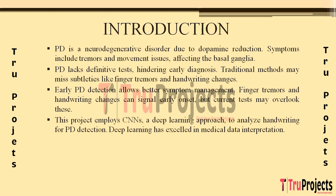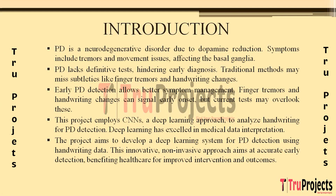This project leverages the power of deep learning, specifically Convolutional Neural Networks (CNNs), to analyze handwriting patterns for Parkinson's disease detection. Deep learning has shown exceptional accuracy in classification tasks, and its application in medical fields interpreting data like X-rays and MRI scans has proven advantageous. The primary goal is to develop a deep learning based system using handwriting data, training a model on handwritten samples from both affected and non-affected individuals to achieve accurate and early detection.